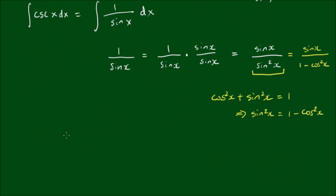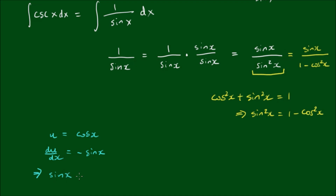Now I'm going to make my first substitution, where I let u equal the cosine of x. Taking the derivative with respect to x, du/dx differentiates to negative sine of x. Separating the differentials, we can rewrite this as sine of x dx equals negative du.